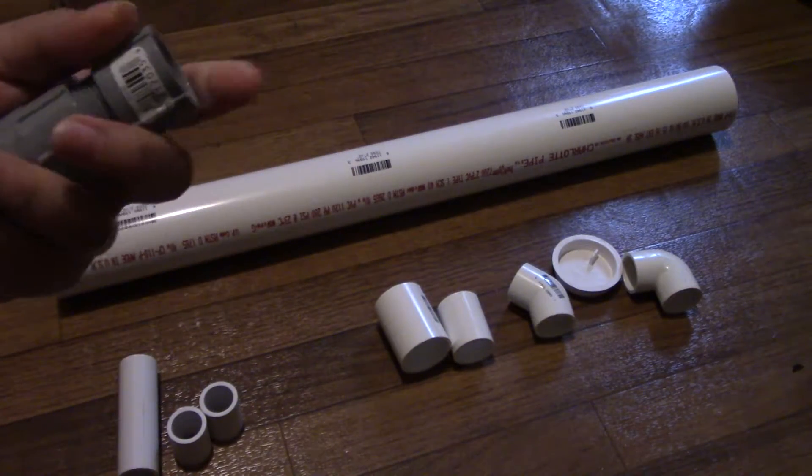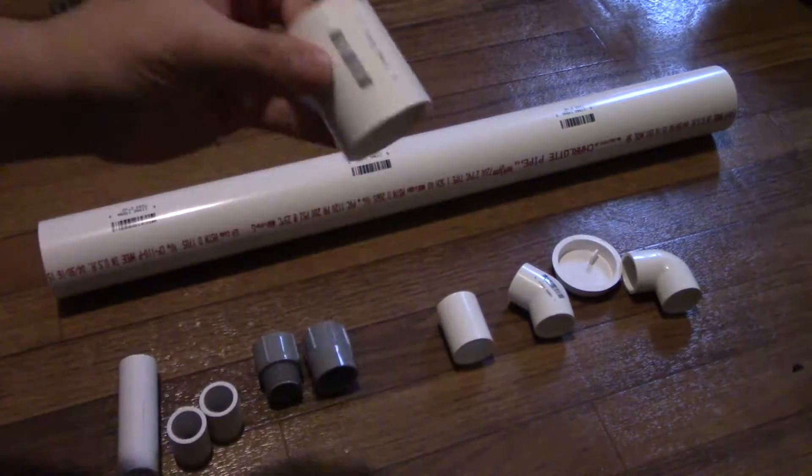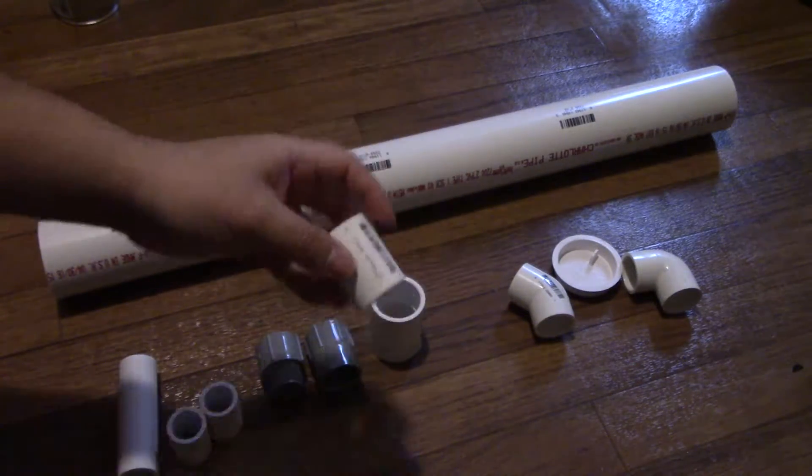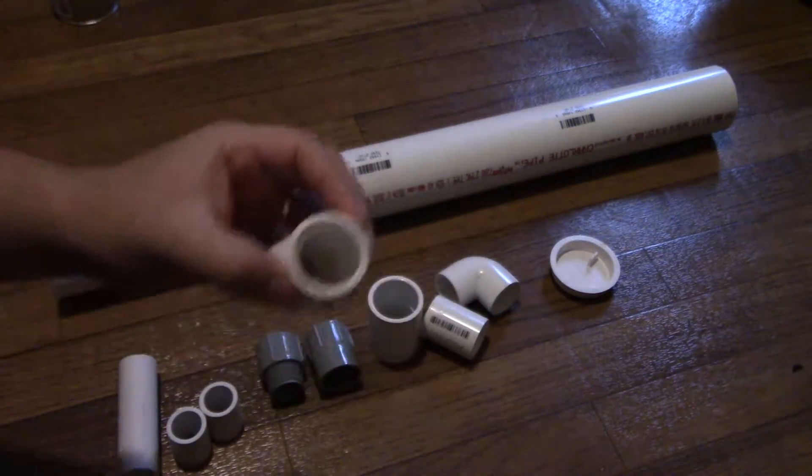I'll leave the description and links for all the material. You need one one-inch coupling, a three-quarter inch coupling, a right elbow, so a 90-degree elbow, and a 45-degree elbow.